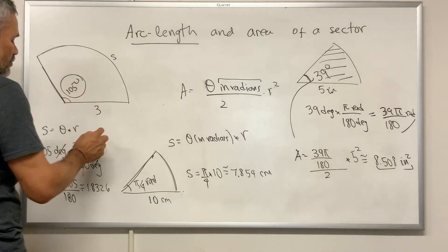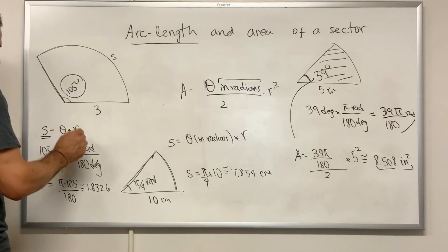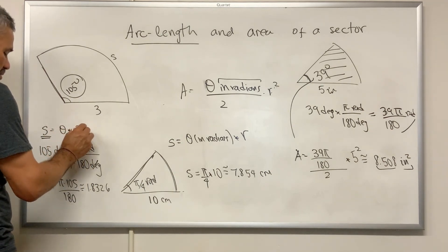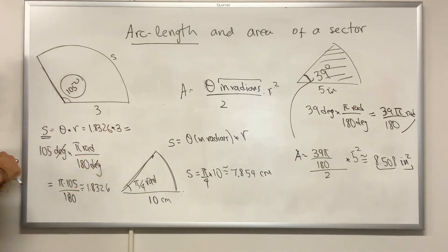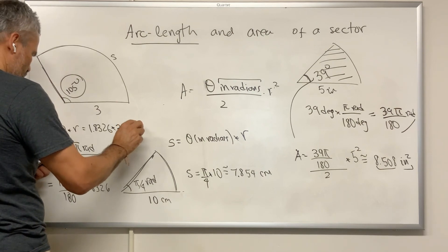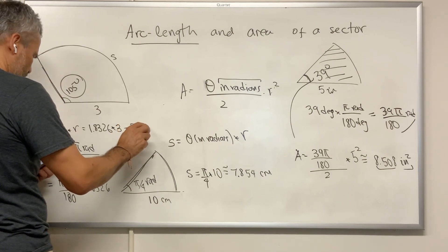And then to find the length, it's just this number 1.8326 times the radius. And we get 5.498.